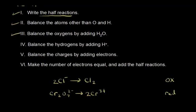Step three: balance the oxygens by adding water. In the oxidation half reaction there are no oxygens, so nothing to do there. In the reduction half reaction, we have seven oxygens on the left and none on the right. We add seven water molecules to the right, which gives us seven oxygens on the right. Step three is done.